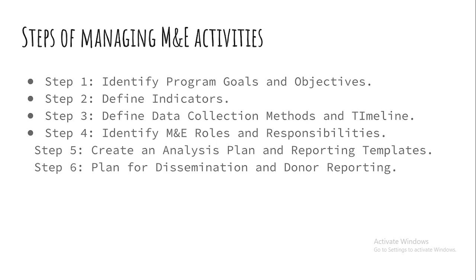Step number two: define your indicators. If you set a goal, objective, or outcome for the project, then you must define your indicator. For example, if I'm running a schools project and the objective is to have 40 schools with energy-saving cooking stoves to promote energy conservation, then the indicator would be: 40 energy-saving stoves installed in 40 schools.